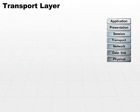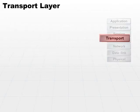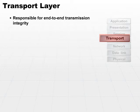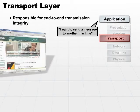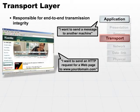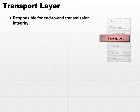The next level down will be our transport layer. The transport layer is responsible for end-to-end transmission integrity. So the application layer says it wants to send a message to another machine. Your web browser says, I want to send an HTTP request for a web page to www.yourdomain.com. He passes it all the way down, and the transport layer is responsible for making sure that the message gets there in its entirety on the other end.